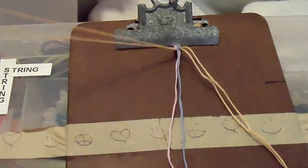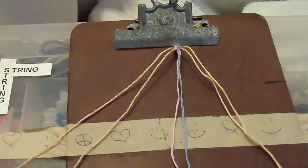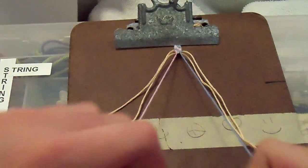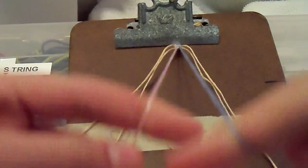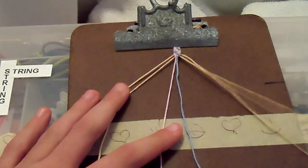This bracelet takes six strings, and you're going to set them up like this: background, background, line, line. So you'll have two different colors, and then you'll have two more backgrounds on this side.